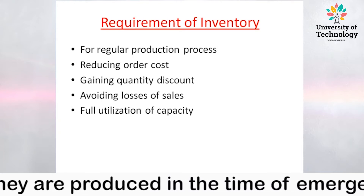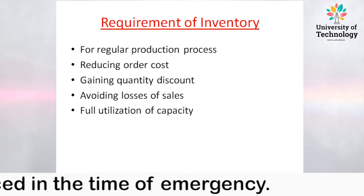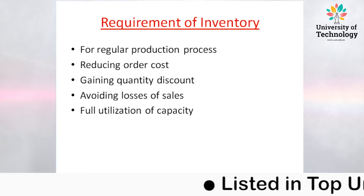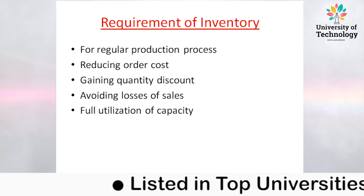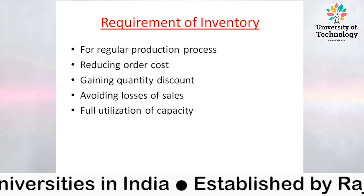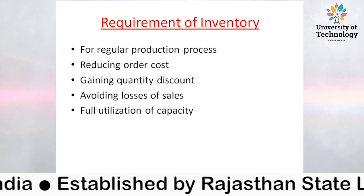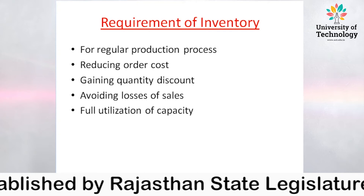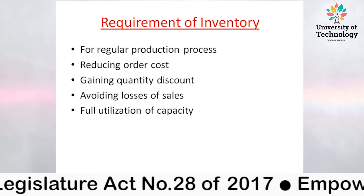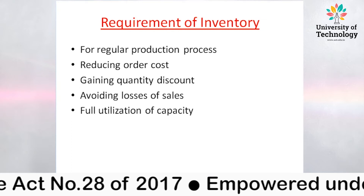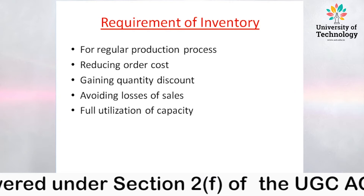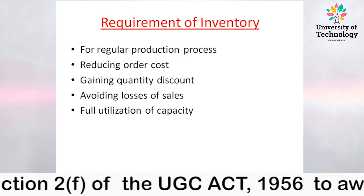Avoiding losses of sales: if the firm does not have goods for sale, it will result in a loss of sale, which is a loss for the business. Next, full utilization of capacity: the firm must hold sufficient quantity of raw material to fully utilize its unutilized production capacity. If sufficient raw material is available, the business can fully utilize its production capacity.